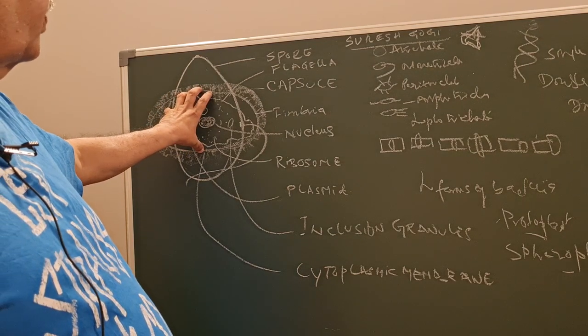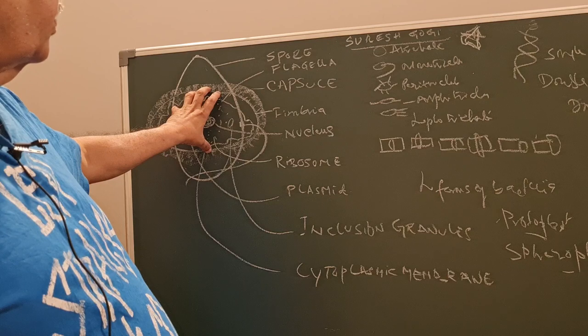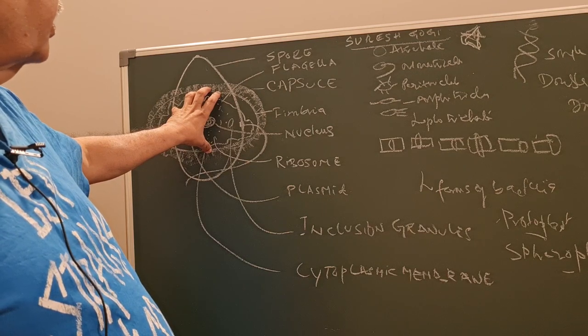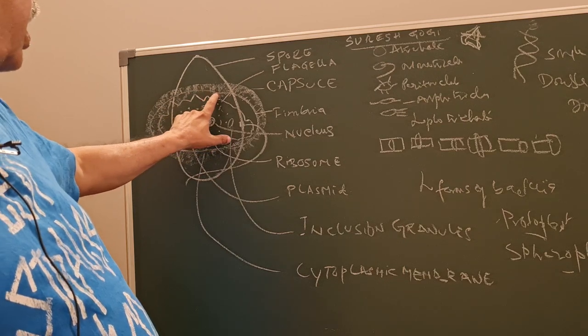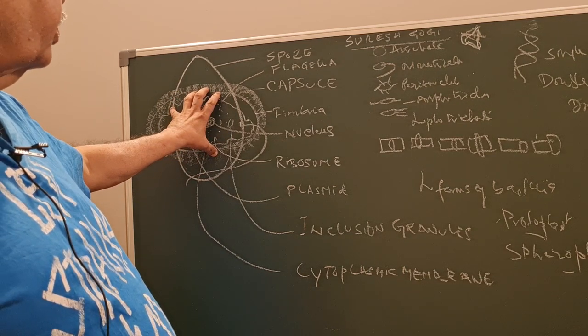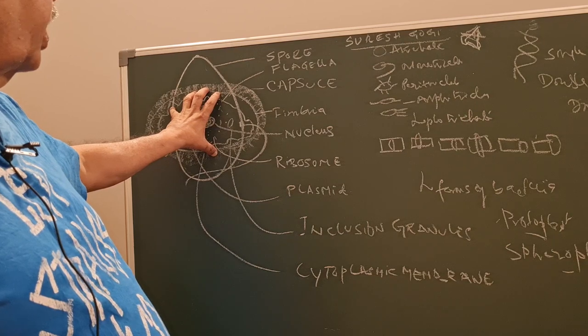The bacterial cell wall is made up of peptidoglycan. It is made up of N-acetylmuramic acid and N-acetylglucosamine held together by a peptide chain. It is 40 times thicker in gram-positive compared to gram-negative bacteria.